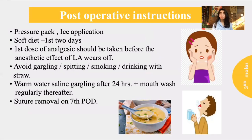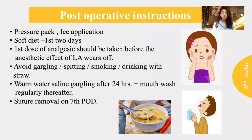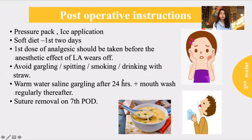Postoperative instructions are very important for increasing the success rate of the surgery. The patient should apply pressure with ice packs and follow a soft diet for the first two days. The first dose of analgesic should be taken before the local anesthetic wears off, as the pain can be unbearable. The patient should avoid gargling, spitting, drinking with a straw, and smoking, as smoking may delay healing. Warm saline gargling may begin after 24 hours. The suture is removed on the seventh postoperative day.